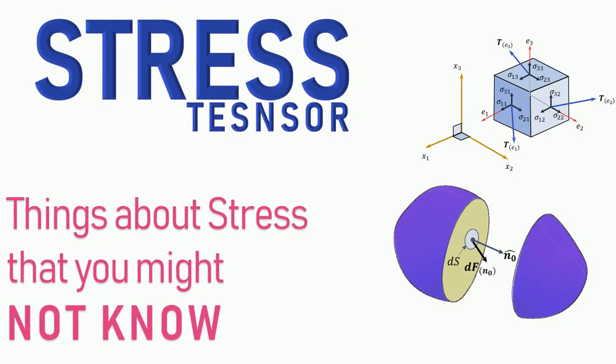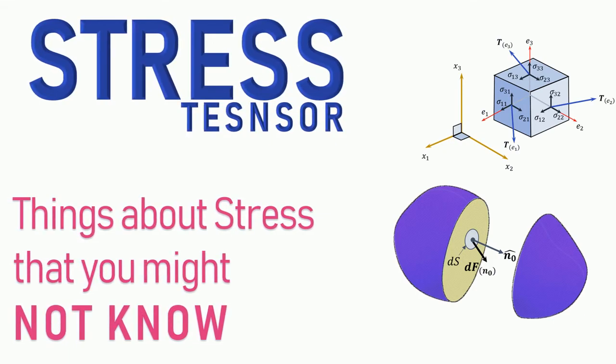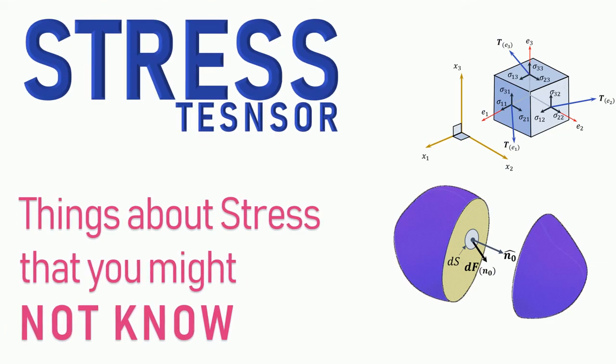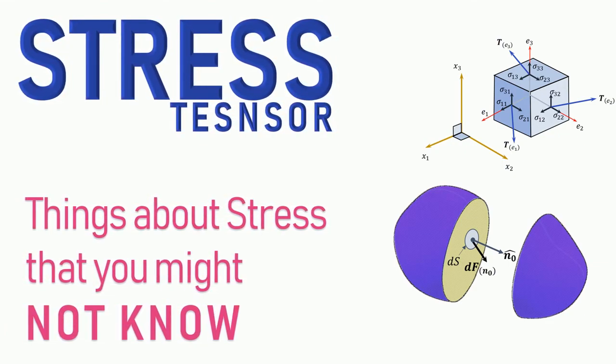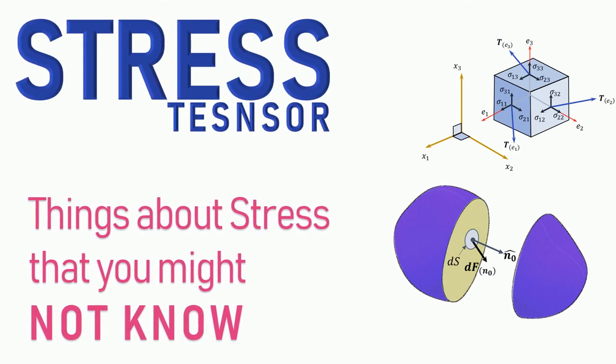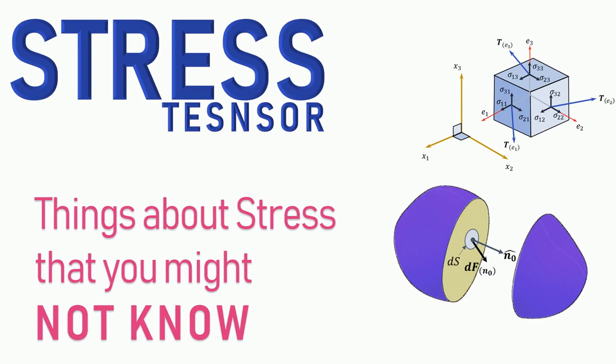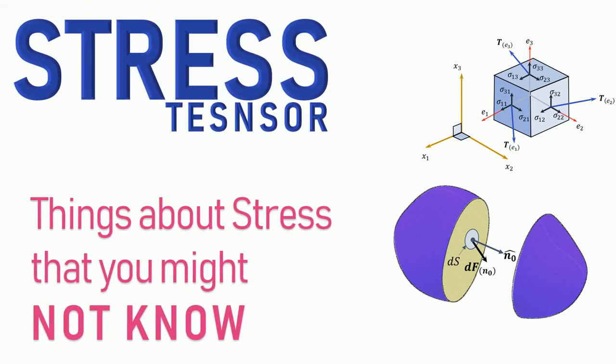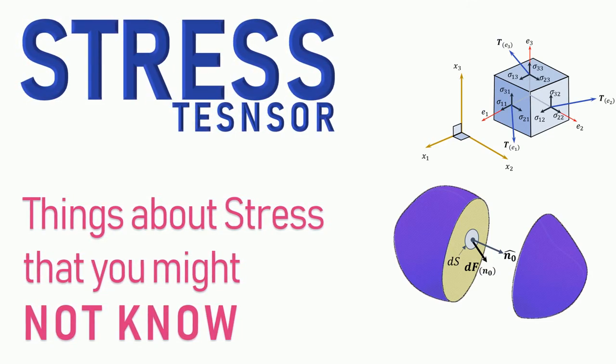In the previous video, we finally deduced what the sigma function—that transforms the normal unit vector into a traction on a plane—looks like. It was a three by three matrix transformer because it was a linear transformation, as suggested by Cauchy. In this video, we are going to introduce the term stress.